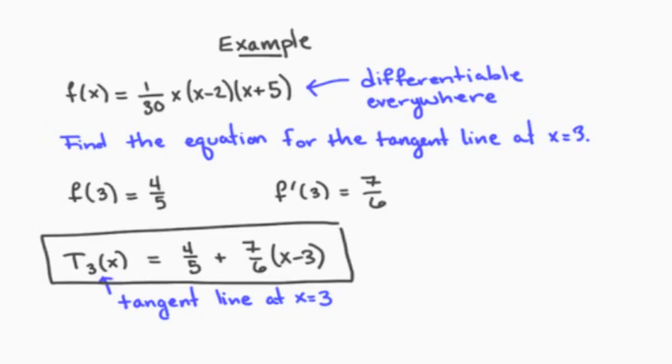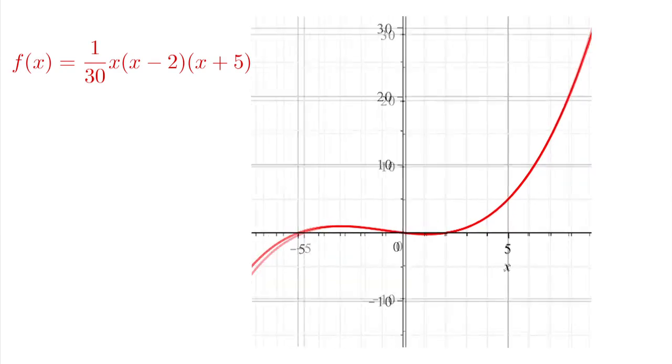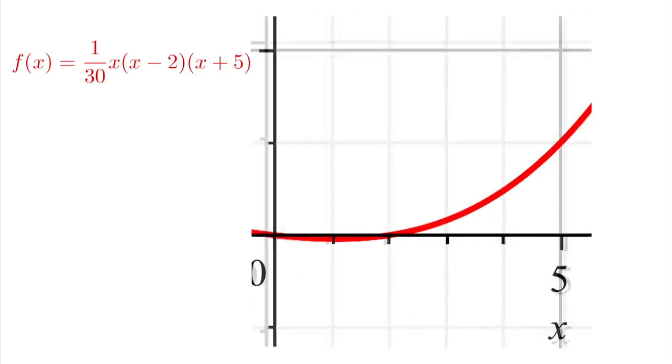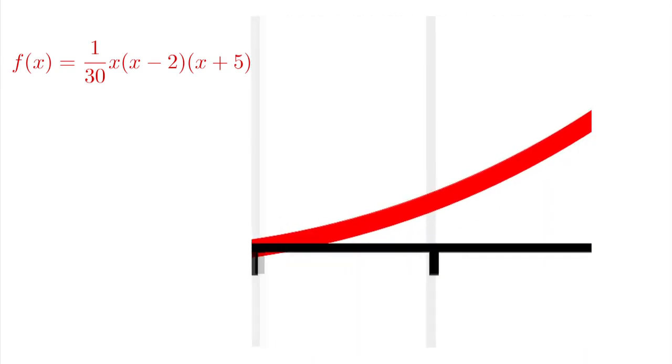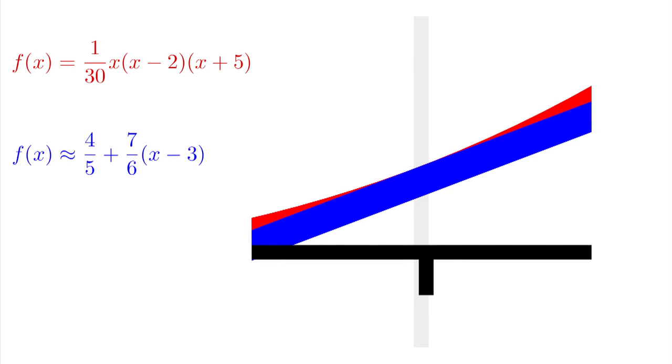Let's take a look at the graphs of f(x) and T_3(x). The function f(x) is graphed in red. The further we zoom into the graph at x=3, the more it begins to resemble a straight line. The slope of the line approaches the value of the slope at the tangent line at 3, which is drawn in blue. The tangent line certainly seems to be a good approximation to our function when we are close to x=3.